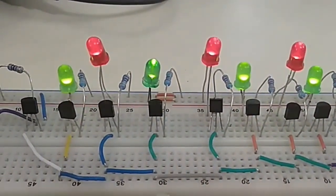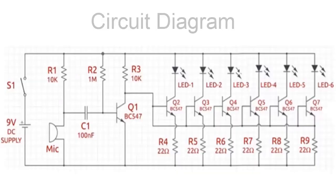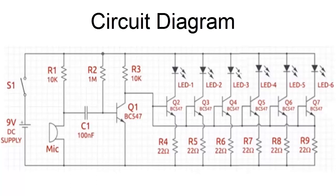This is a music rhythm based dancing light where the LED fades and grows higher and lower on the basis of music beats that are absorbed. We have used 6 or 7 components.